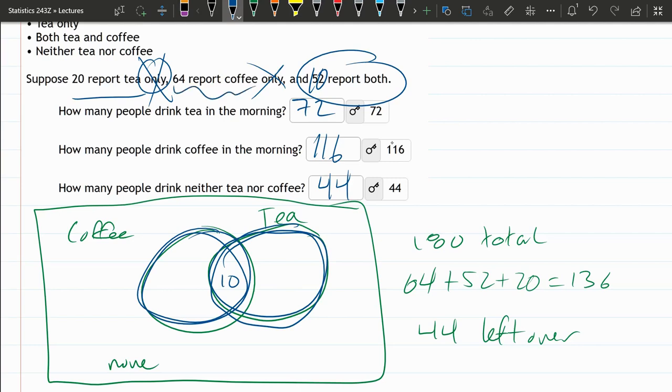Now, 64 report coffee. So that would mean 54 are here because 64 is total coffee. And 20 total tea, so 10 and another 10, that puts 20 inside of the tea circle.